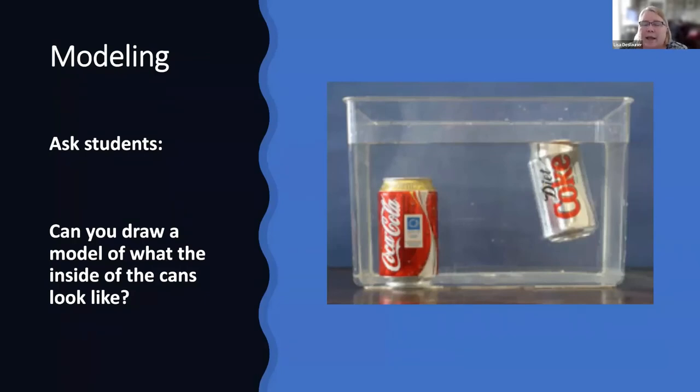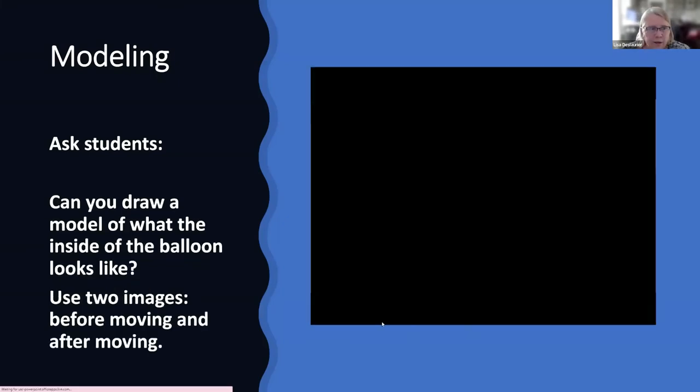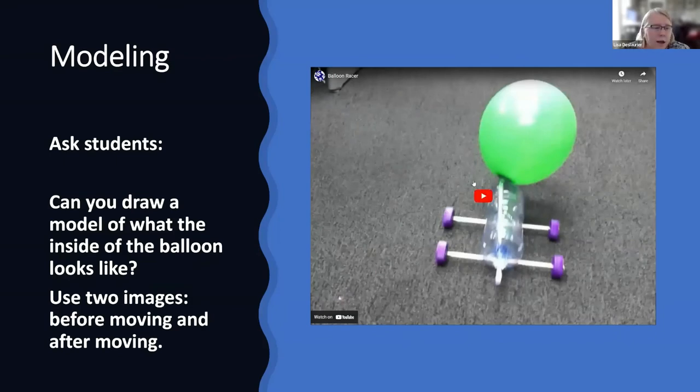So here we can go back and say, after we've learned about density, can you draw a model of how the Coke inside of the Coke can looks different than the inside of the diet Coke can? And their model should show the same volume, but fewer particles, right, in the diet Coke can. And so that's why it has a lower density than the can of Coke. So that should be easy for kids to make a model of. Or this one, can you draw a model of what the inside of the balloon looks like? How does it look now compared to how it looked at the end? Or can you have a force diagram showing me before and after here? That's also a model showing that they understand what's going on.